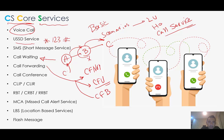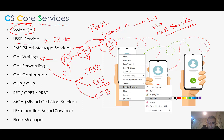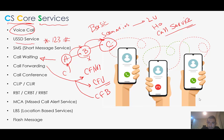Call Forward If Busy: if B's number is busy, the call forwards to C. Call Forward If No Answer is another type. We also have Call Conference service, which allows A and B, while talking together, to add C to their call.